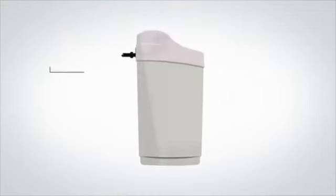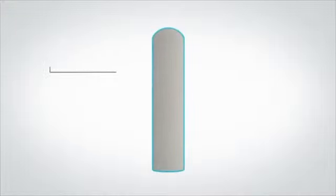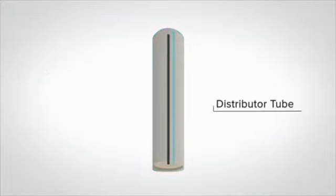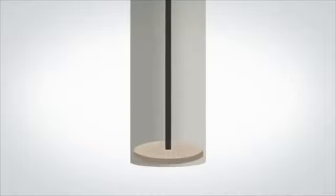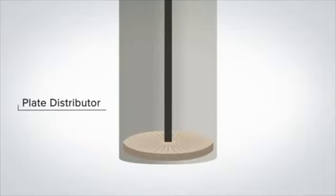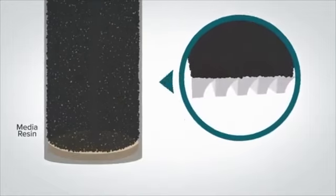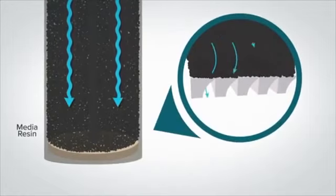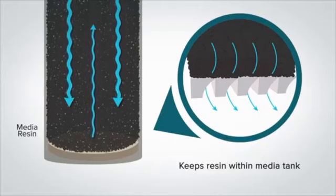Under the control valve is the media tank. Inside the media tank is a tube that runs to the bottom of the tank called the distributor tube. At the bottom of the distributor tube is an innovative plate distributor. The plate distributor has many small slits that allow the clean water to enter the distributor tube but keeps the resin from entering the home water supply.